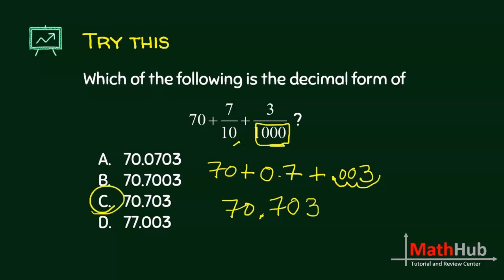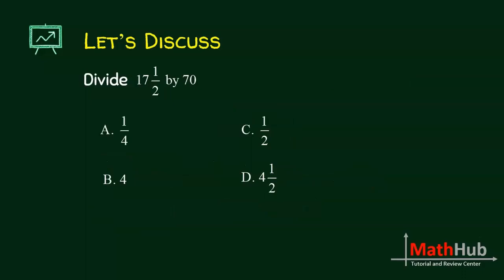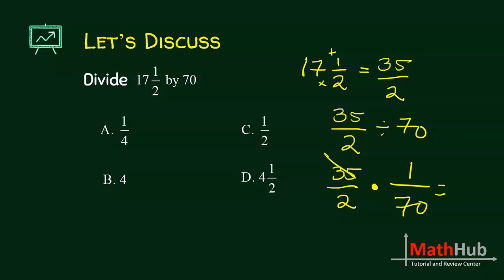We want to divide 17 and a half by 70. You have to convert them first to improper. 17 times 2 is 34, plus 1 is 35. Hence, we have 35 over 2 divided by 70. Division becomes multiplication, and the second number you get the reciprocal. 35 and 70 are both divisible by 35. This is 1, this becomes 2. Therefore, the answer is 1 fourth.